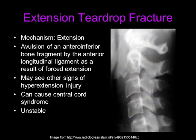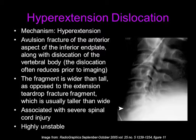Here is an example on the right of a radiograph in a patient with an extension teardrop fracture. Hyperextension dislocation is a highly unstable injury that occurs with hyperextension. It is an avulsion fracture of the anterior aspect of the inferior end plate, along with a dislocation of the vertebral body. However, the dislocation is not seen with imaging because it usually reduces prior to imaging. The fragment is often wider than it is tall, as opposed to the extension teardrop fracture fragment, which is usually taller than wide. It is associated with severe spinal cord injury.